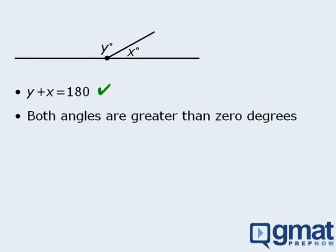Now can we assume that both angles here are greater than 0 degrees? The answer is also yes. If an angle is shown in a diagram, then we can assume that the angle is greater than 0 degrees.